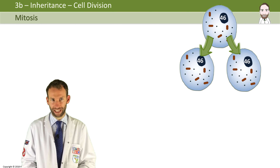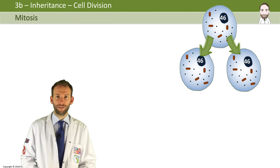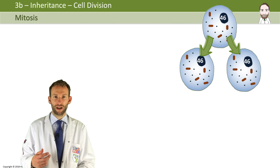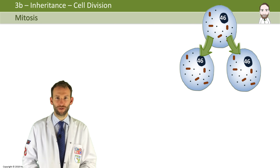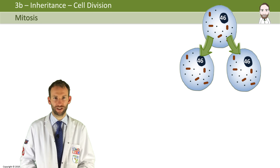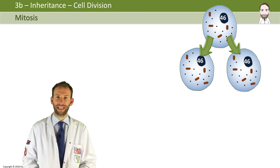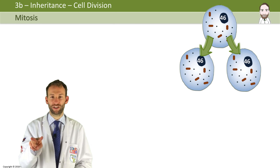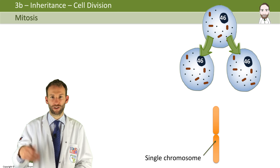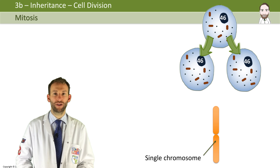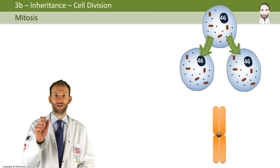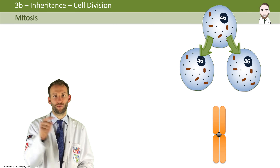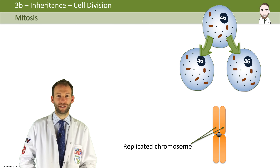You may have spotted that you start off with a cell with 46 chromosomes and end up with two cells with 46 chromosomes, so we've doubled the number — from 46 in one cell to 92. Where do all these extra chromosomes come from? Before the cell splits into two, all of its DNA has to copy. Then that double chromosome can be pulled apart — one copy goes into one cell, and the other copy goes into the other cell.